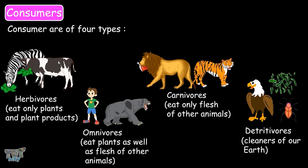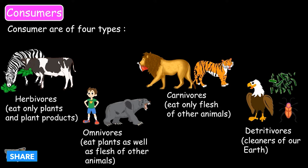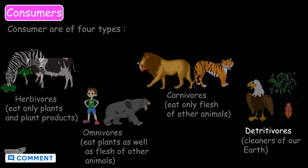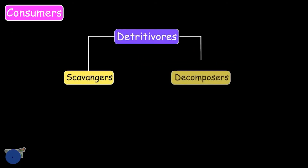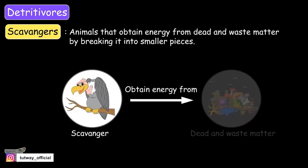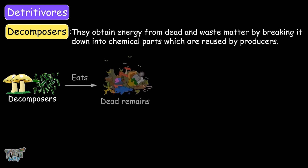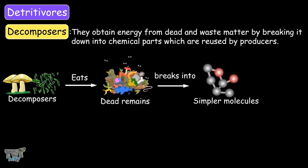Herbivores eat plants and plant products. Omnivores eat both plant products as well as the flesh of other animals. Carnivores eat the flesh of other animals. And detritivores, the cleaners of our earth, are of two types: scavengers and decomposers. Scavengers are the animals that obtain energy from dead and waste matter by breaking it into smaller pieces. And decomposers are the organisms that obtain energy from dead and waste matter by breaking it down into chemical parts, which are again reused by producers.